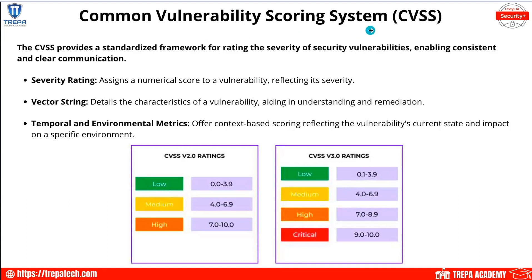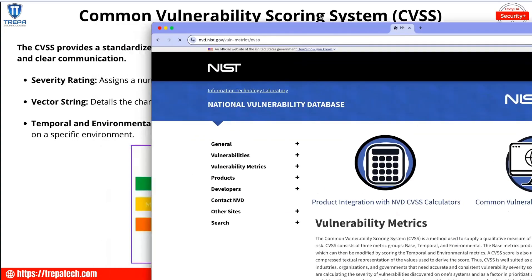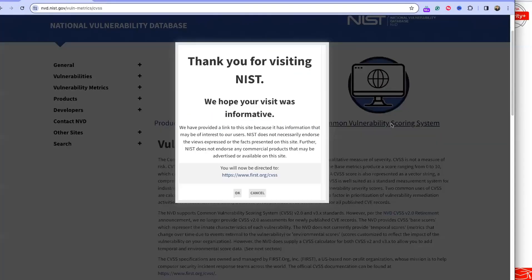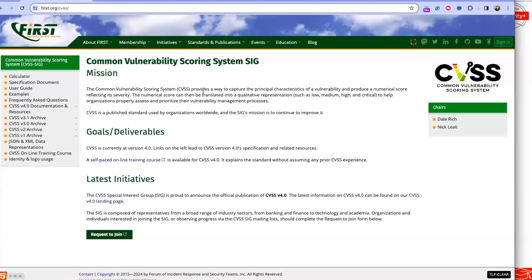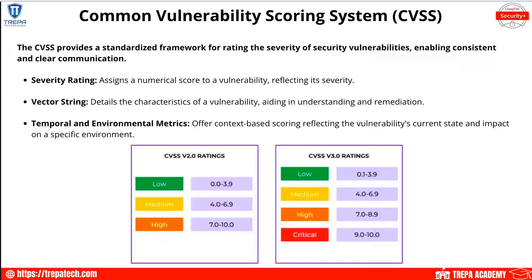The Common Vulnerability Scoring System (CVSS) is the standard for scoring how severe a CVE or vulnerability is. CVSS provides a standardized framework for rating the severity of security vulnerabilities, enabling consistent and clear communication across the entire cybersecurity landscape. You can visit NIST to view these vulnerability metrics and use CVSS scoring calculators. When a CVE comes out, we give it a CVSS score.